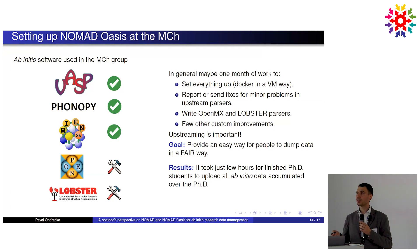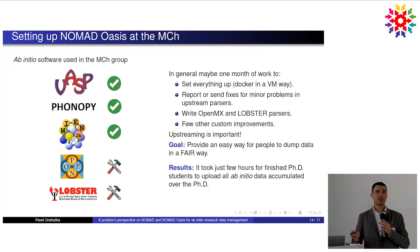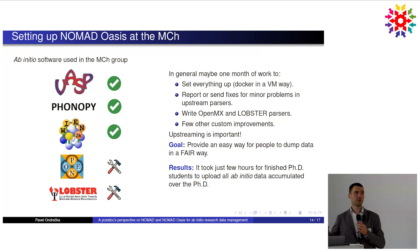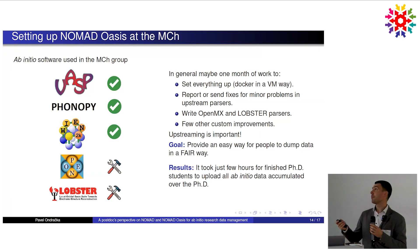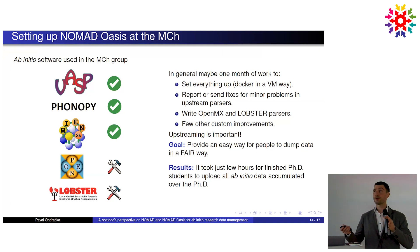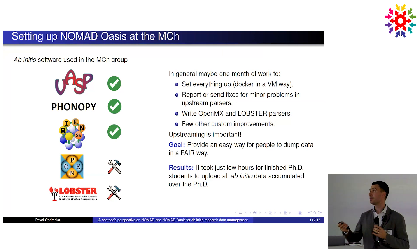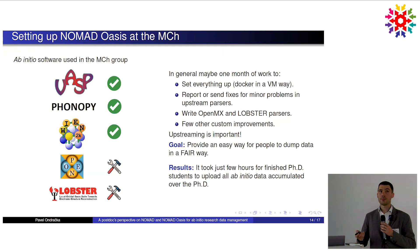We needed only two new parsers: one for OpenMX — a DFT code with atomic basis sets and plane waves used by the group for large-scale ab initio molecular dynamics — and one for LOBSTER, which does bonding analysis on top of plane-wave DFT. In general, it took about one month of work to get the Oasis running, report parser problems, send some fixes, write the two parsers, and make some improvements.